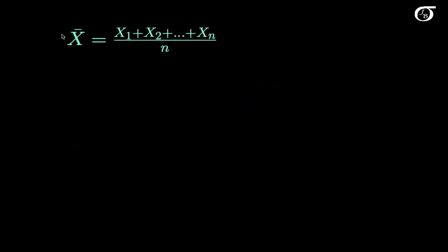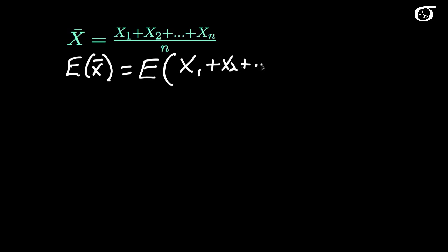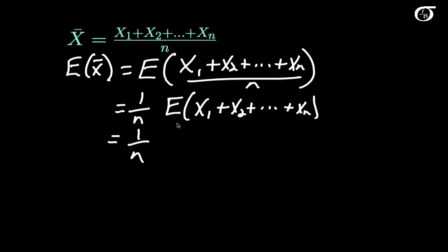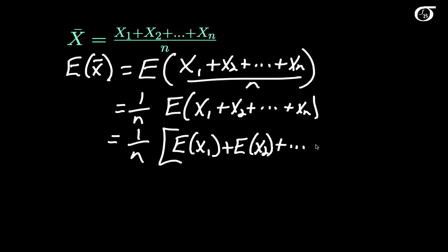Now let's derive the mean and variance of x-bar. We need the expectation of x-bar, which is the expectation of (x1 + x2 + ... + xn) over n. Using properties of expectation discussed earlier, we can take this constant outside and say this is equal to 1 over n times the expectation of the sum of x1 through xn. The expectation of a sum is always just the sum of the expectations, so this is 1 over n times the expectation of x1 plus expectation of x2, all the way through xn.